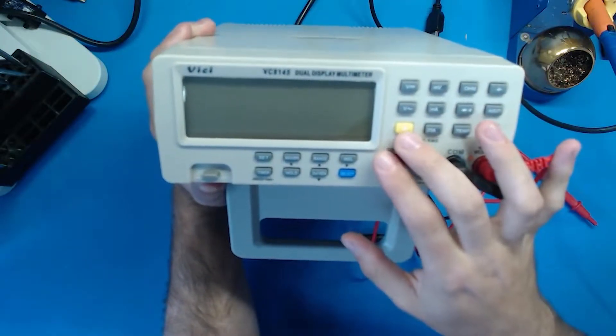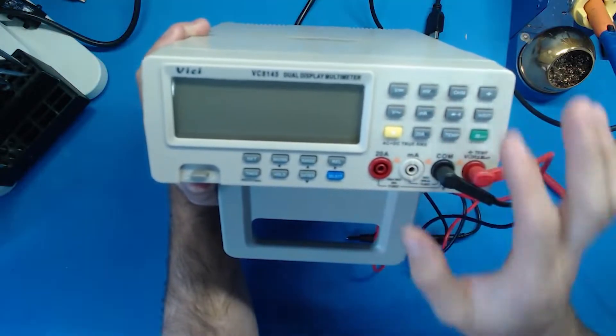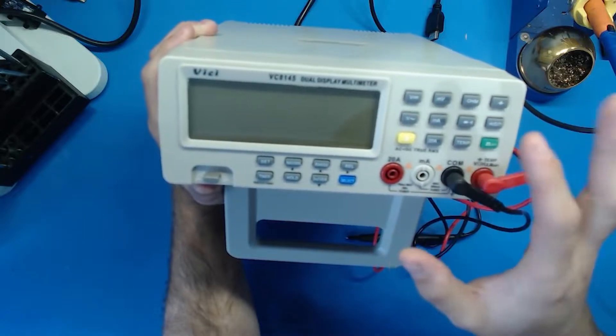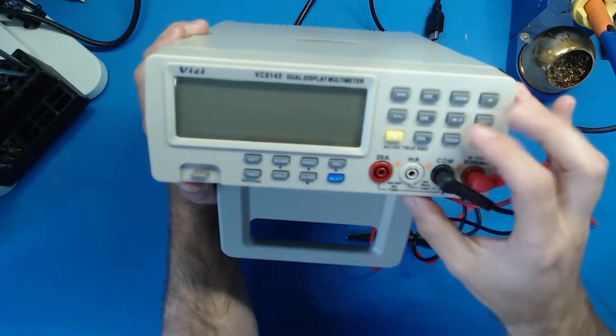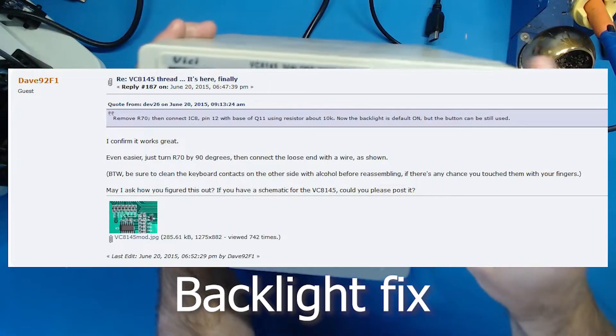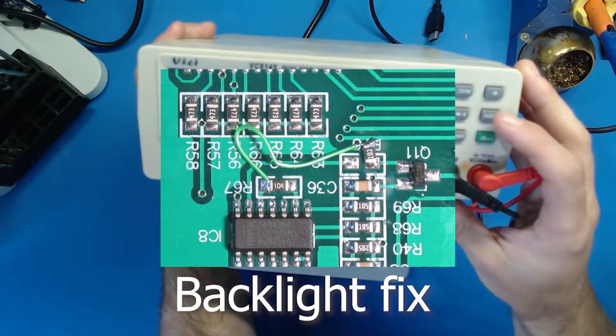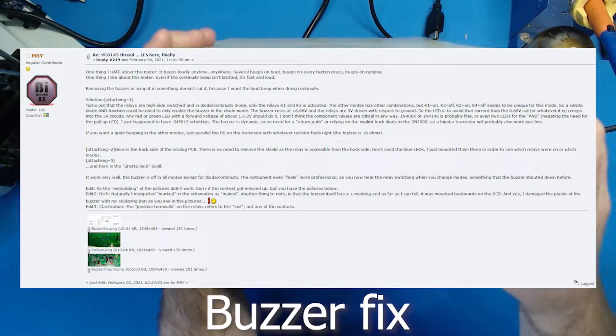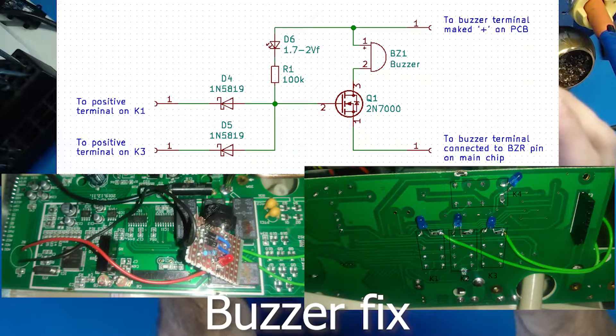So the first way is we're going to fix this backlight problem and the second thing we're going to do is try and restrict that buzzer so it generally only works on continuity mode. Fortunately a number of users over at EEVblog have come up with some fixes for these issues.